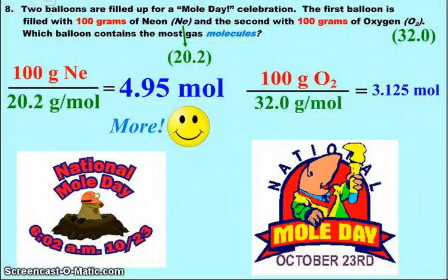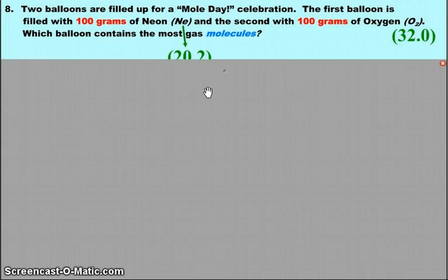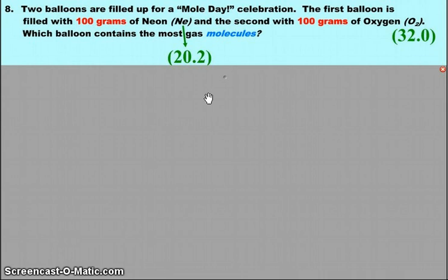Question eight. Let me cover that so as not to overwhelm you. I've got two balloons, and one is filled with 100 grams of neon, the second with 100 grams of oxygen, O2. Which balloon contains the most molecules? So we've got to go from mass to particles. We're going to need the molar masses. So I've got 20.2 for neon and 32.0 for oxygen. So I need to compare the two.